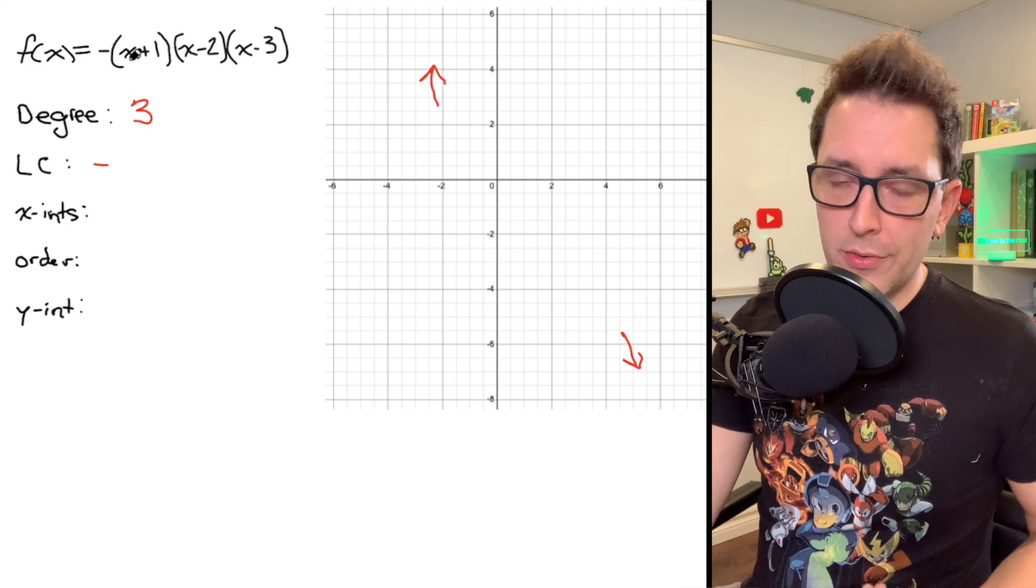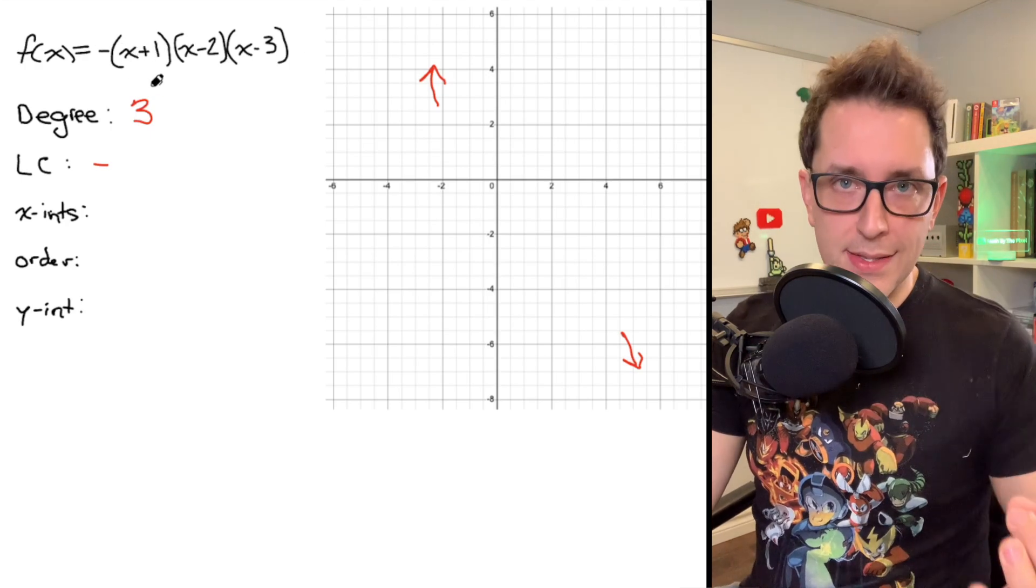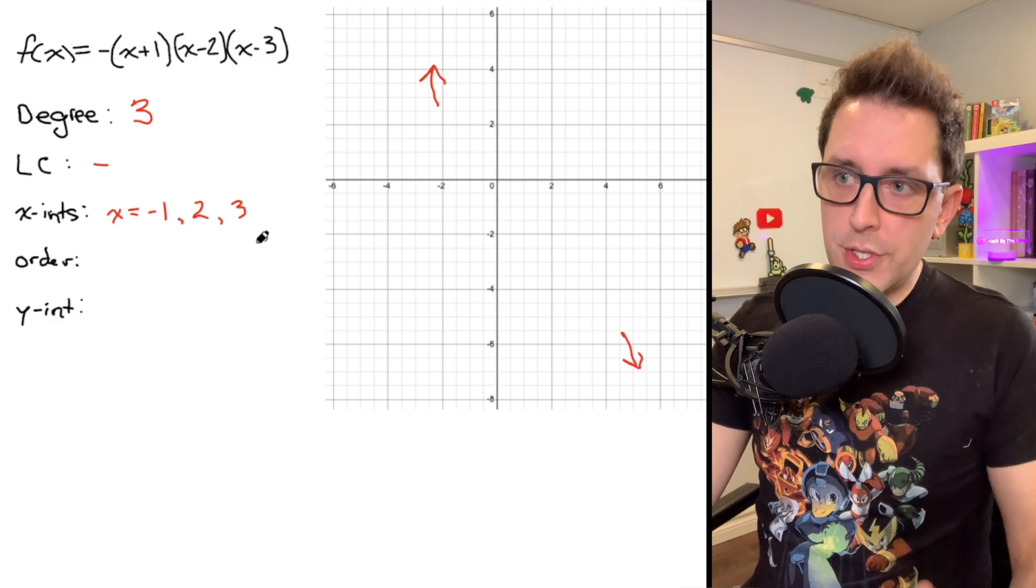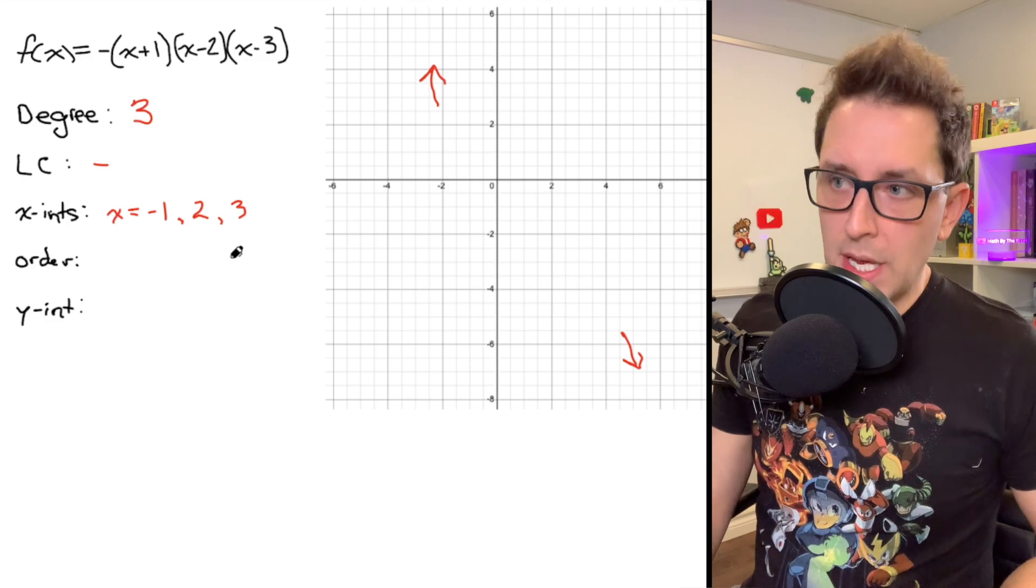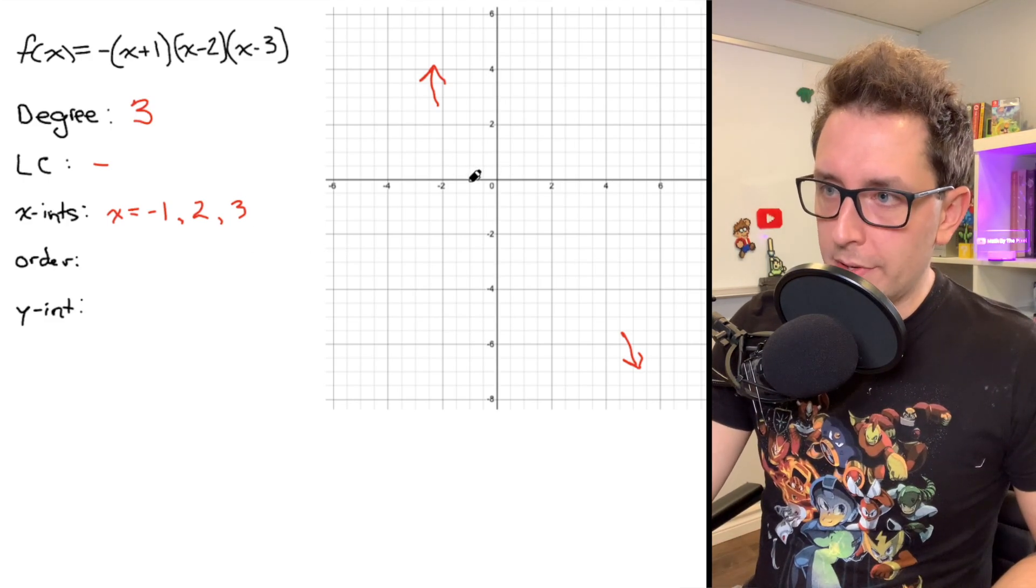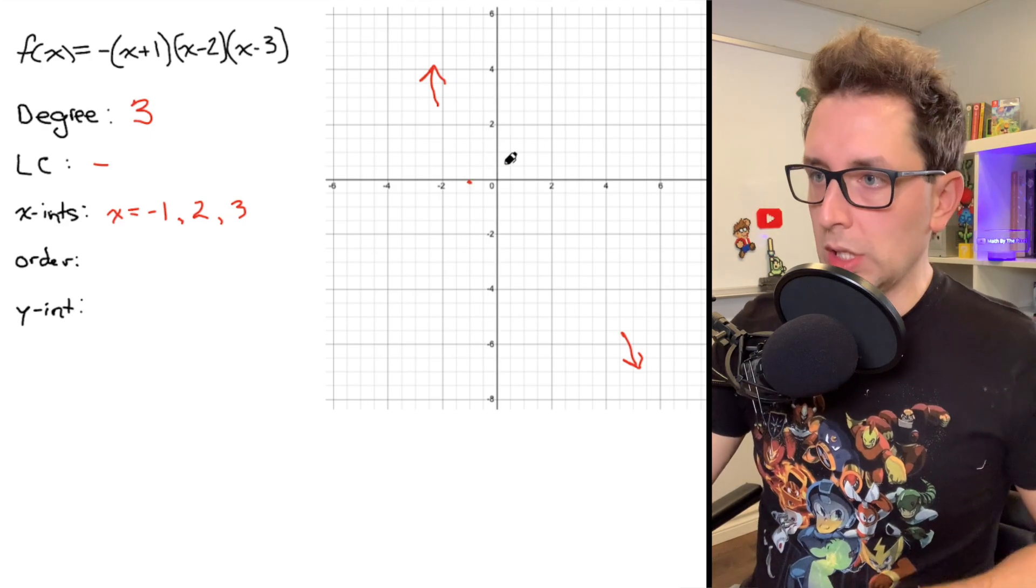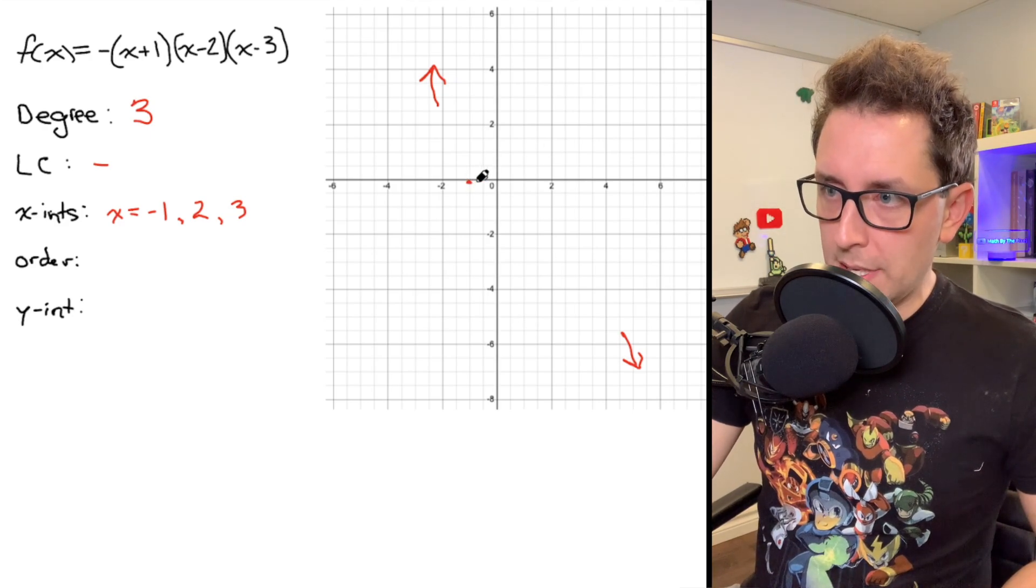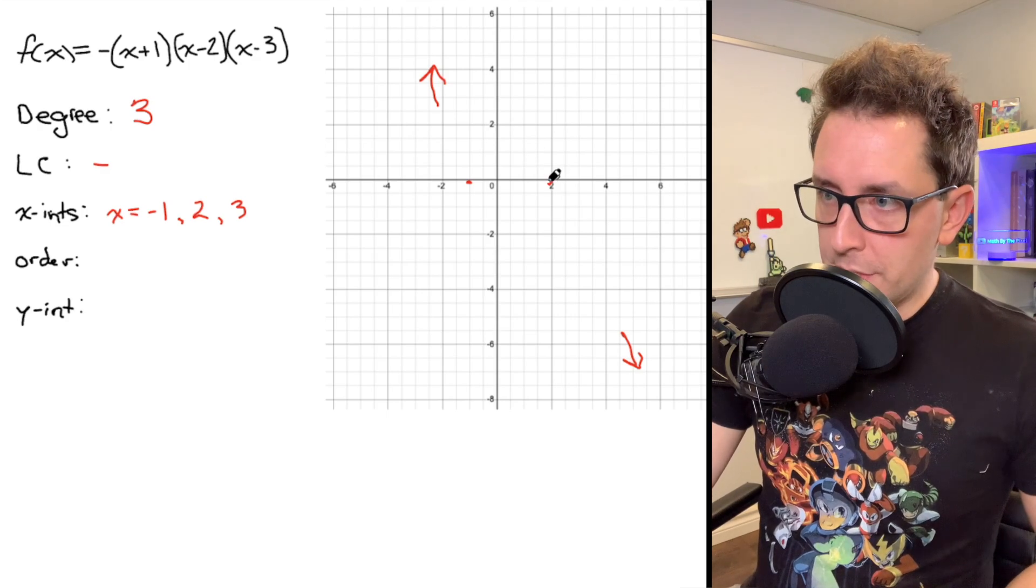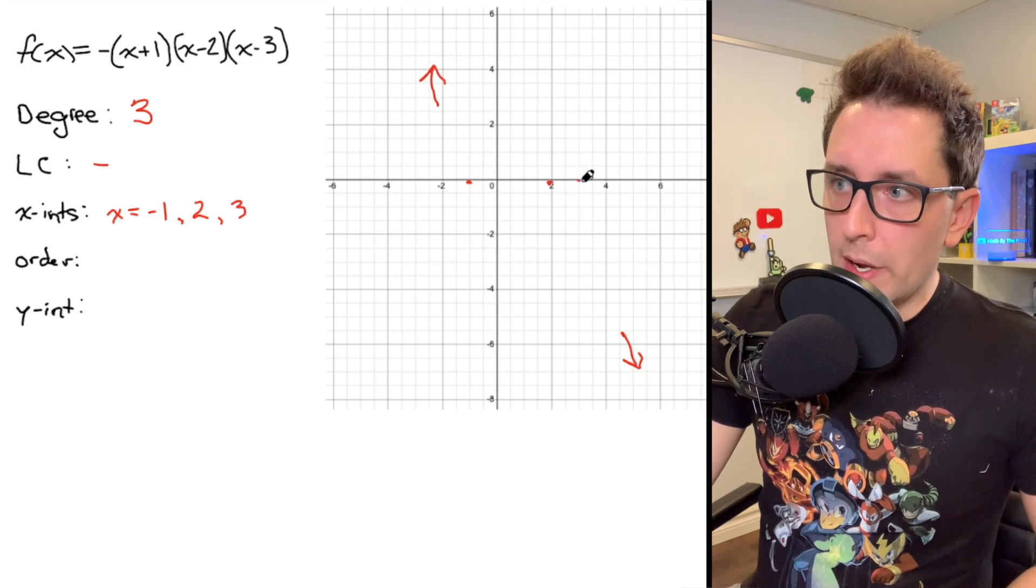So if I put negative 1 in for x in this first set of brackets, I'm going to get 0. So I've got negative 1, 2, and 3 as my x-intercepts. And I'm going to go ahead and plot those on my graph here so I can really start coming up with an accurate sketch of what this polynomial is going to look like. So I've got an x-intercept at negative 1, I've got an x-intercept at 2, and I've got an x-intercept right here at 3.